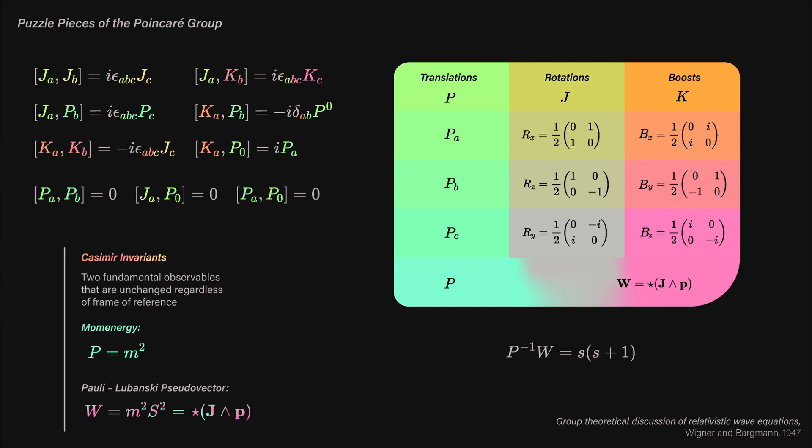So the first invariant is momenergy, which is the momentum magnitude, which doesn't change regardless of how you change your frame of reference, and that we knew already.